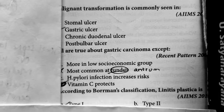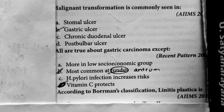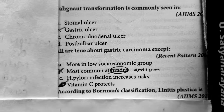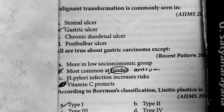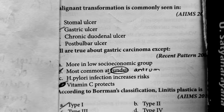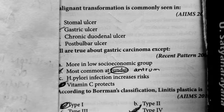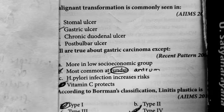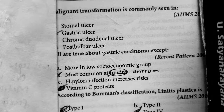Question number 3: according to Borrmann's classification, linitis plastica is type 4. It is not type 1 — it is type 4 according to Borrmann's classification.